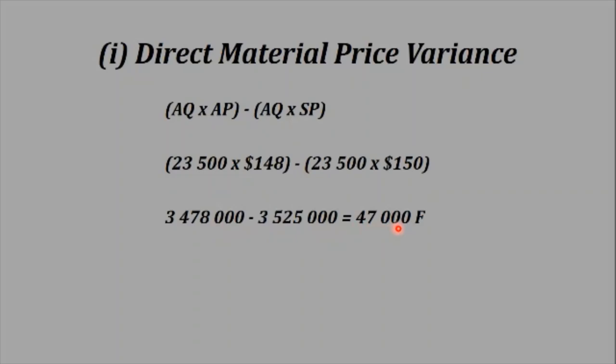Working that out gives 47,000 favorable for the direct material price variance. If you didn't know this formula before, I would suggest you learn them by heart before your exam. I haven't seen them giving this out to students in an exam, so you have to find a way of remembering them. I would suggest you memorize them rather than trying to logically derive them during the exam itself.